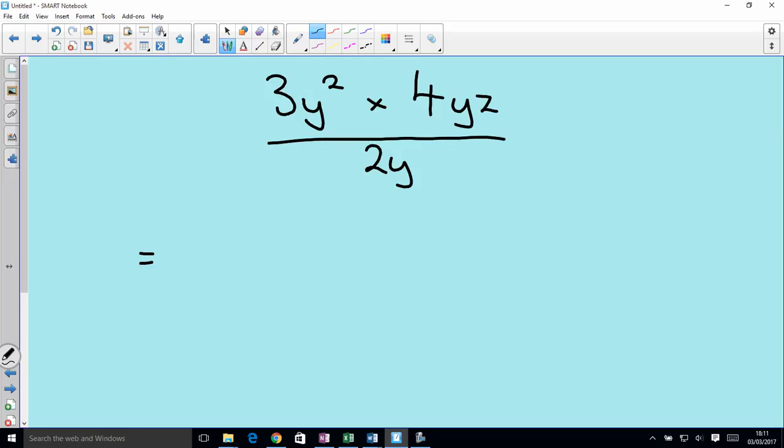So look at the top line. 3y squared times 4yz equals 3 times 4, y squared times y, and the z is going to be multiplied by the rest of it. So we get that. We've still got the 2y at the bottom.